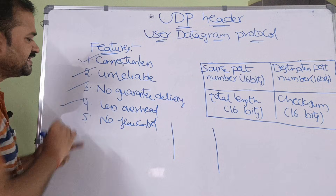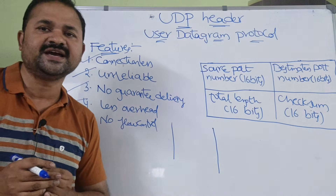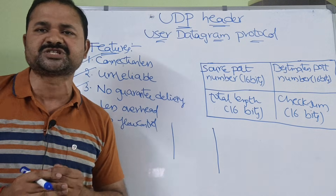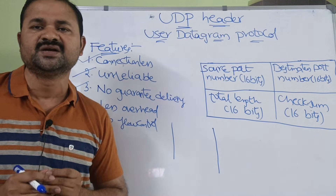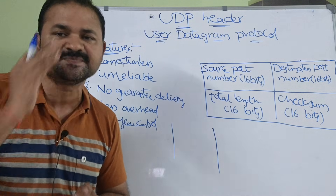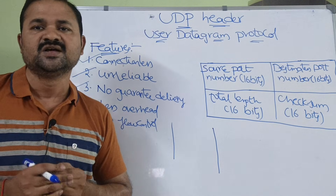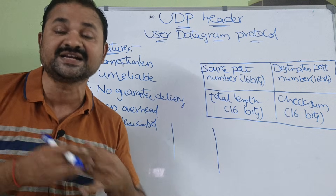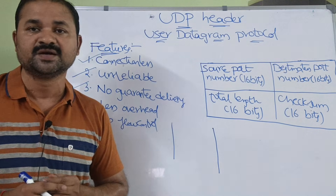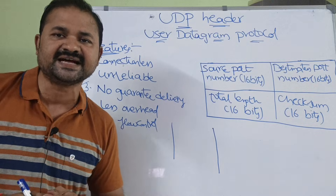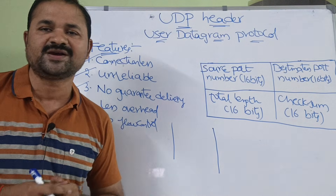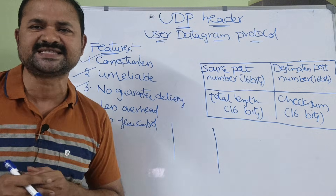Next, there is less overhead. There is no need of transmitting any acknowledgments or sequence numbers. If there are any errors, there is no need of any retransmissions. There is no need to establish the connection and no need to use three-way handshake. That's why we can say that UDP has less overhead, because there is no need of all these things.